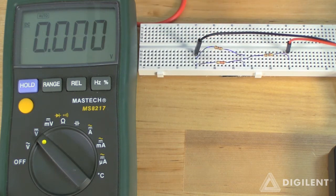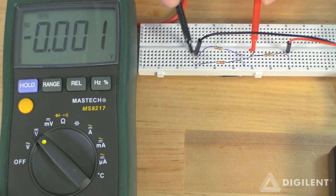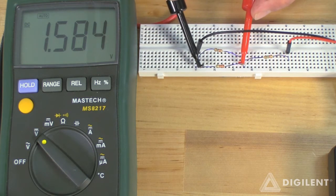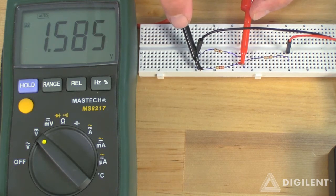Finally, for the 2.2 kiloohm resistor, I use this polarity. Negative voltage is here. Positive voltage is here. I get positive 1.58 volts.